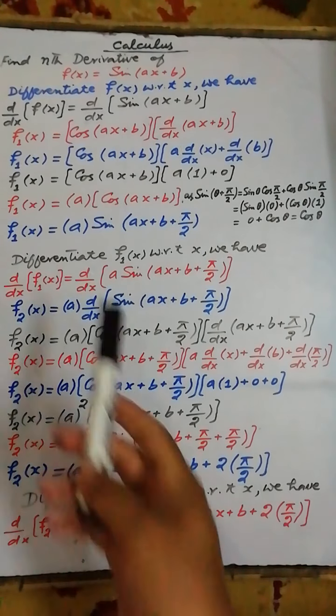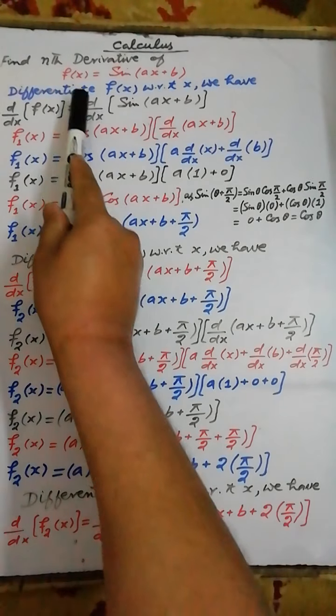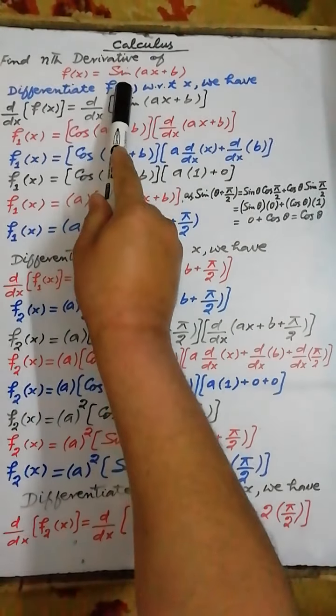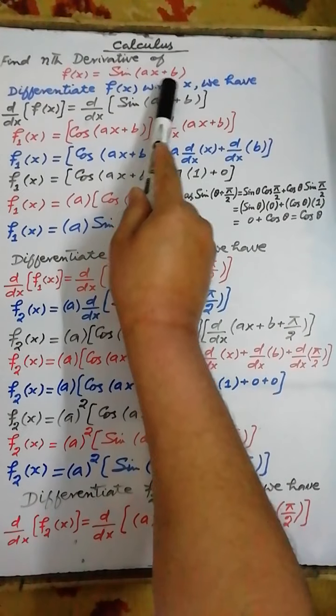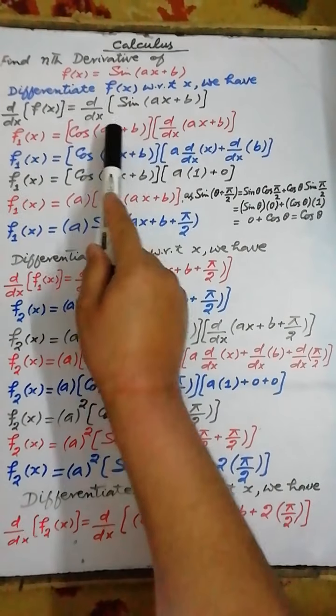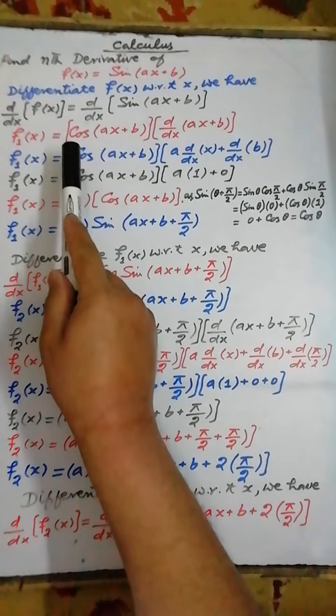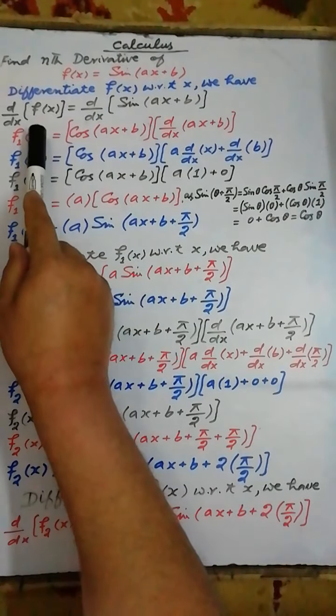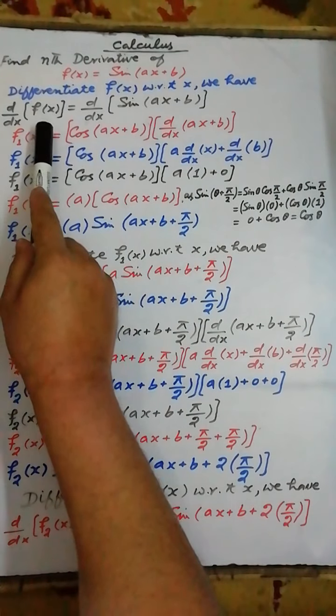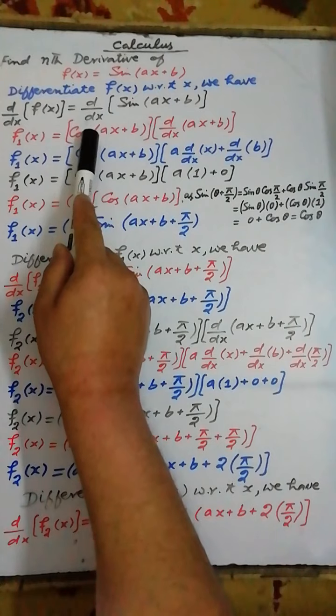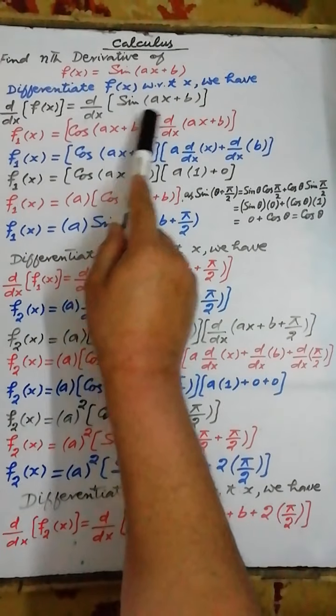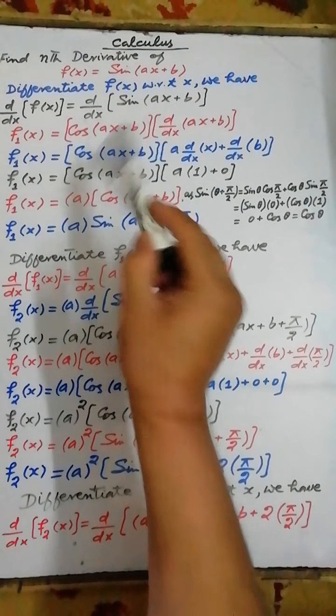Our next formula finds the nth derivative of the function f(x) = sin(ax + b). To differentiate the given function, we have d/dx of f(x) = d/dx of sin(ax + b).